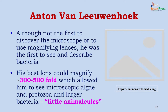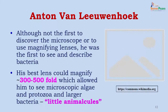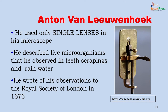Credit for discovery of the microscope is often given to Anton van Leeuwenhoek. Though he was not the first to discover the microscope, he was the first to actually describe bacteria through his microscope. Surprisingly, he did not use compound lenses — he used a single lens, and the best magnification he could achieve was 300 to 500 fold. Through this he could describe algae, protozoa, and probably the larger bacteria. Even through this single lens, he described live organisms observed in teeth scrapings and in rainwater, and these were presented to the Royal Society of London in 1676.